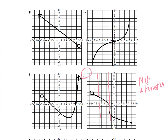Let's talk about example G. Hopefully you can tell pretty quickly that this is a function — all vertical lines would only cross through it once, so yes it is a function. For the domain: what is the smallest x-value? The arrow goes to the left forever, so there's no smallest x-value — it would be negative infinity. The biggest x-value is 9, so x < 9, giving a one-sided inequality. For the range, the smallest y-value is negative 3, and the arrow also goes up forever, so there's no maximum. The range is negative 3 < y, another one-sided inequality.